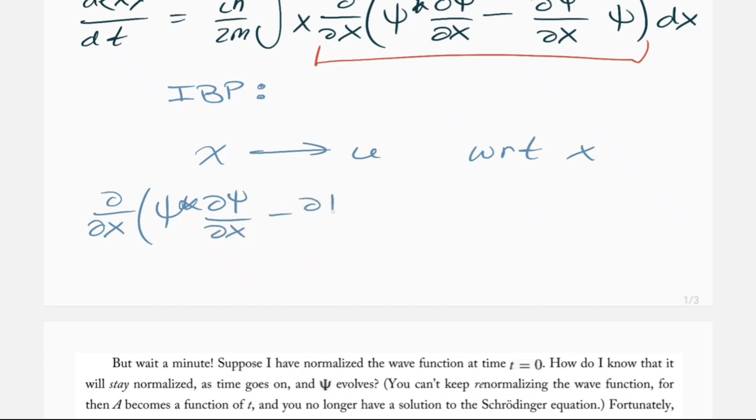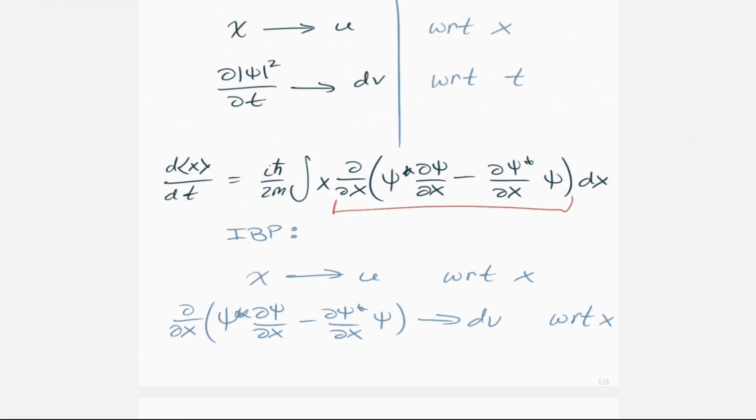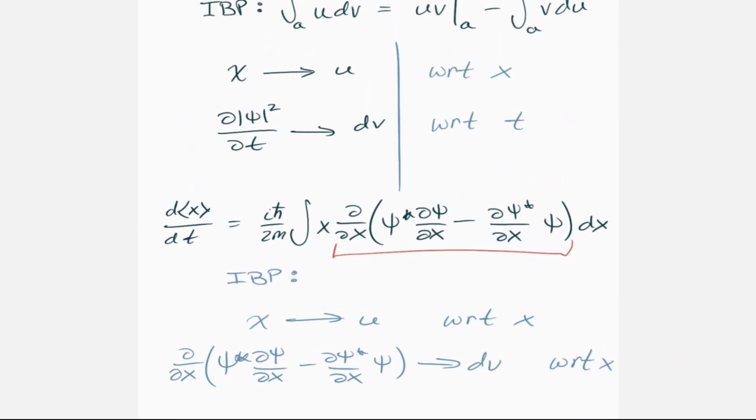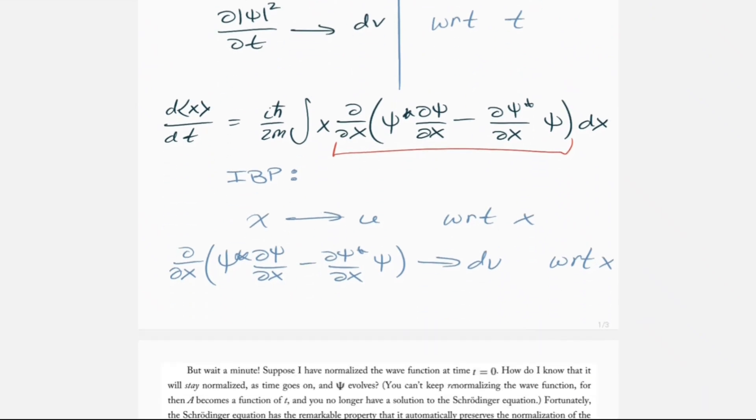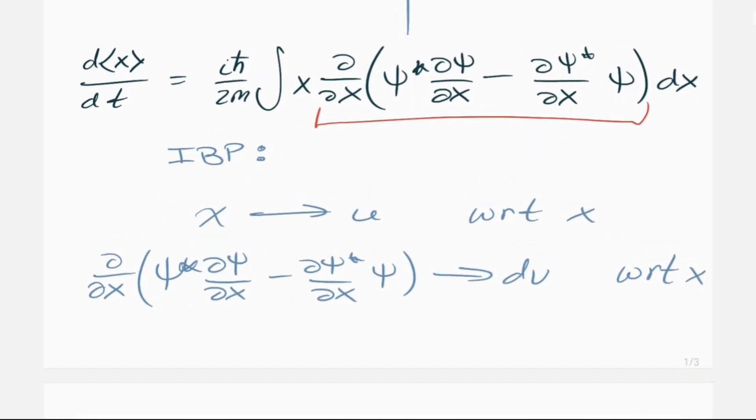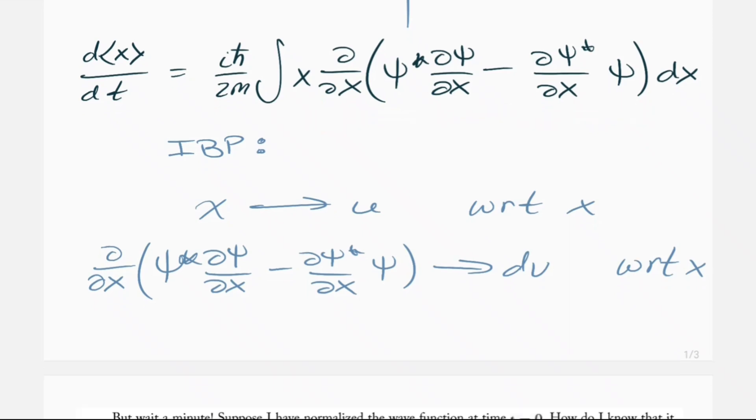minus d psi star dx times psi. Well, that's kind of like our dv part, and that's also with respect to x. So after all the substitutions, which are found in the textbook, we see that our integral here, when we can now do integration by parts, because both of these parts of the integral are with respect to x.